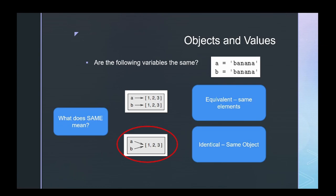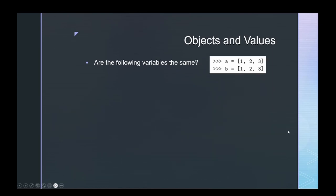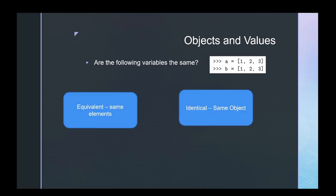So are two variables equivalent or identical? When Python assigns a = 'banana' and b = 'banana', it finds a separate space of memory for each variable, so they are equivalent — same elements but not the same object. That's how we know they are just equivalent and not identical.